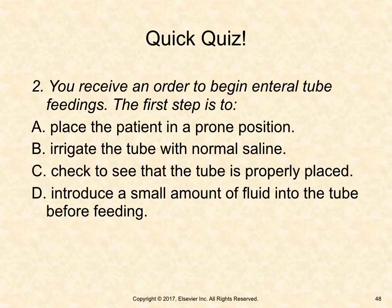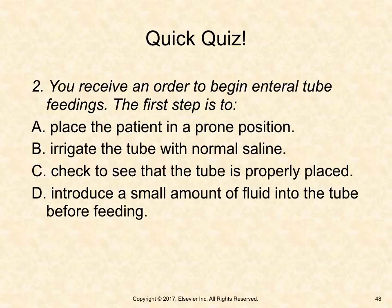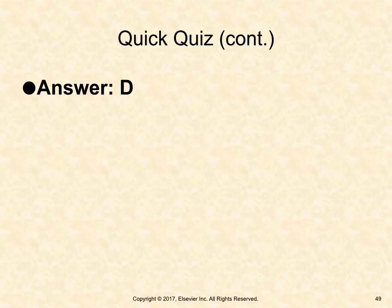Quick quiz: You receive an order to begin enteral tube feedings. The first step is to: A, place the patient in a prone position; B, irrigate the tube with normal saline; C, check to see that the tube is properly placed; or D, introduce a small amount of fluid into the tube before feeding. The answer is D — to check for patency before starting feedings.